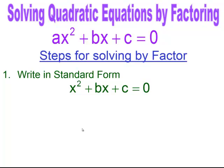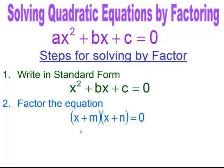Standard form means you set your equation up from the highest exponent down to the constant, and it has to equal zero. If it's not in standard form, you need to move things around to get it there. Once it's in standard form, you can factor the quadratic into two binomials, or if there's just a GCF, you factor that out.